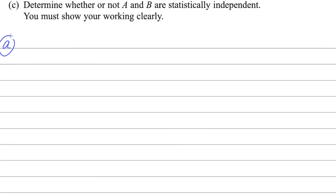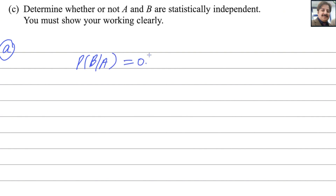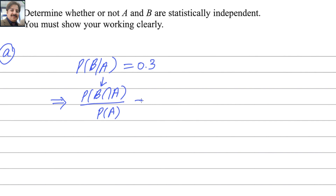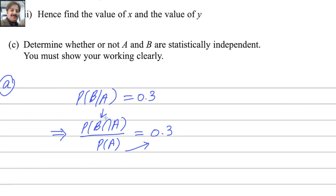Probability of B given that A equals 0.3. The conditional probability formula is: probability of B given A equals probability of B intersection A divided by probability of A. So probability of B intersection A equals 0.3 multiplied by probability of A, which is X. Therefore probability of B intersection A equals 0.3X.